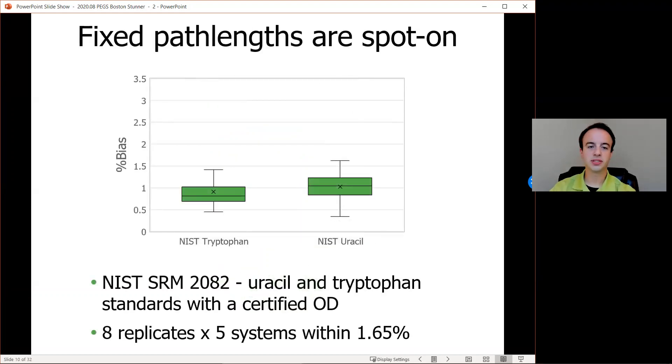Here are examples of uracil and tryptophan NIST standards that are used to show off our fixed path length being very accurate and precise. These are referred to as standard reference material 2082, where we're looking for results that are within 2% of the expected value, and in this case for 8 replicates measured across 5 systems, we see results all within 1.65%. Pretty great.